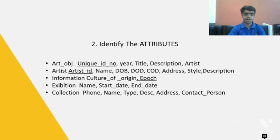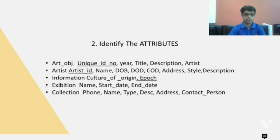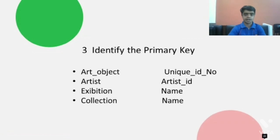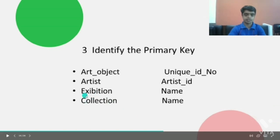Step two says identify attributes. From our case study, we identify these attributes for our ER diagram. Step three says identify primary key. The unique ID number, artist name, and name — these are unique and from these entities these are the primary keys.